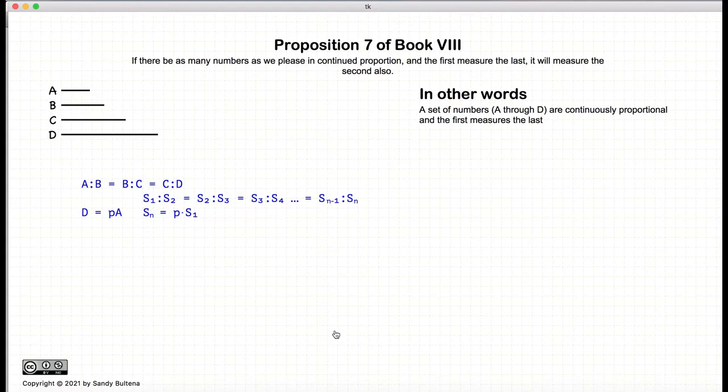And this statement says that if A, the first element, measures the last element D, or S1 measures the last element Sn, then it will also measure the second element.